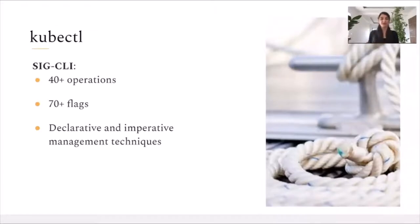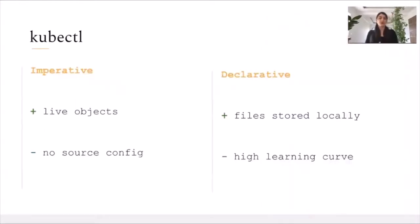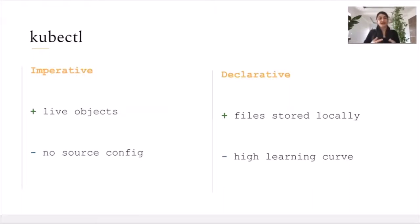But more importantly, with kubectl we have support for declarative and imperative management techniques. When we refer to the imperative technique, that means we're going to operate on the live object straight away — an engineer will either create or delete the resource and this will be immediately visible within the cluster. The good thing about this approach is the fact that it can have a very quick upscale for our developers. They'll be able to deploy their application to the cluster immediately. However, on the downside, it has no source for the configuration. So if you'd like to share this configuration with other teams or a wider organization, it's going to be difficult.